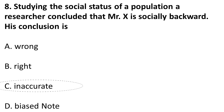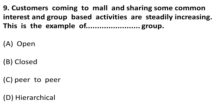The next question: customers coming to a mall, sharing common interests and group-based activities that are steadily increasing — which type of group is this an example of? This is an open group because anyone can come to the mall and participate in those activities. It is not peer-to-peer, and it is not hierarchical. The correct answer is open group.